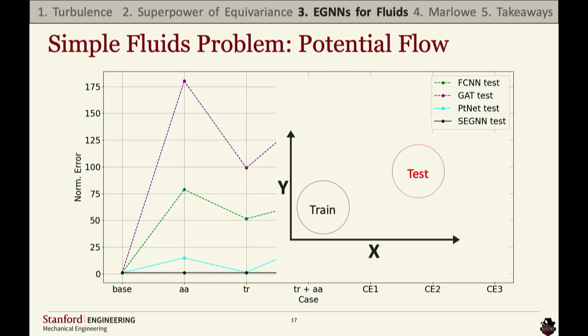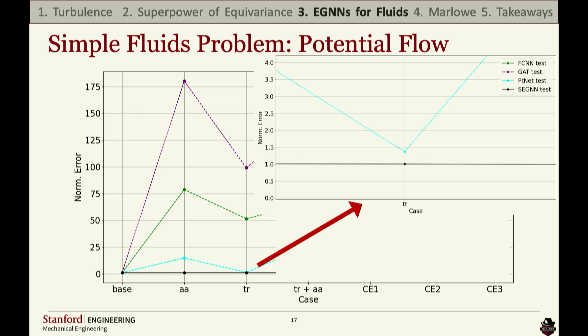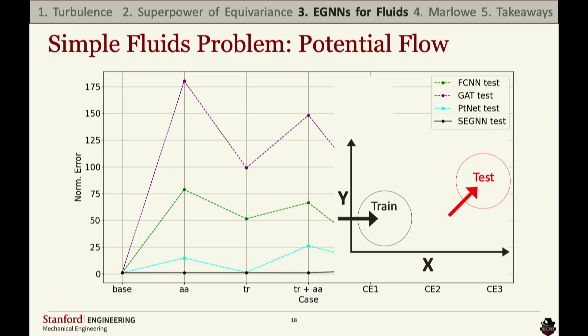For translation, we move the flow field — similar to moving a smiley face to a different part of the image — and SEGNET is dominant. PointNet starts to rival it, but if you zoom in it's about 40% higher than SEGNET. When we rotate and translate simultaneously, SEGNET's error stays constant. However, PointNet has an interesting behavior where it actually mislearned equivariance — when rotation and translation are separated the errors are bounded, but when combined it explodes, which is different from the other models.